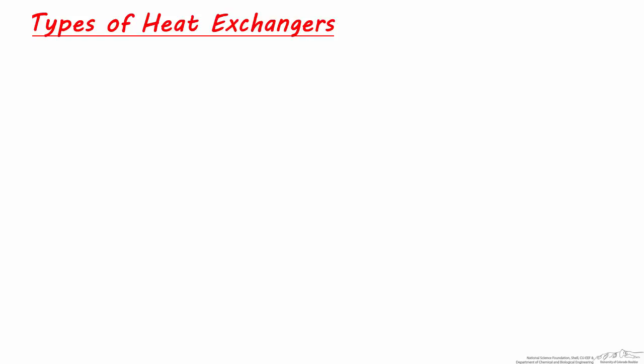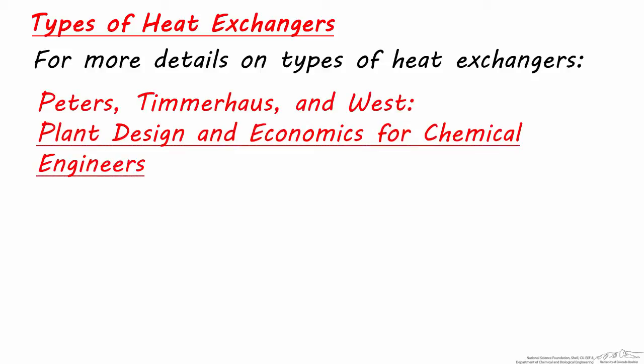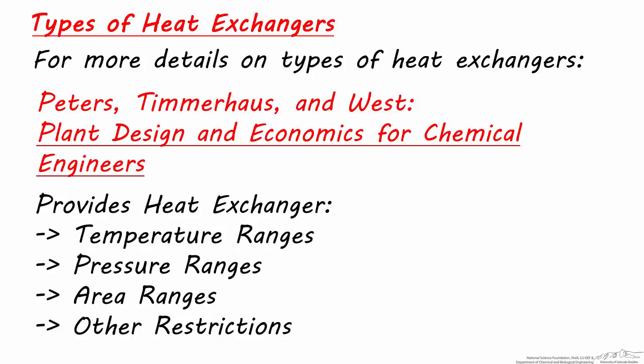If you're not sure which heat exchanger type to choose for your process, or if you'd like more detail on all the units mentioned, I suggest reading Peters, Timmerhaus, and West's Chemical Process Design book, Plant Design and Economics for Chemical Engineers. They go in depth on each of the heat exchangers mentioned, and they provide information on the appropriate temperature range, pressure range, area range, and other restrictions for each type.